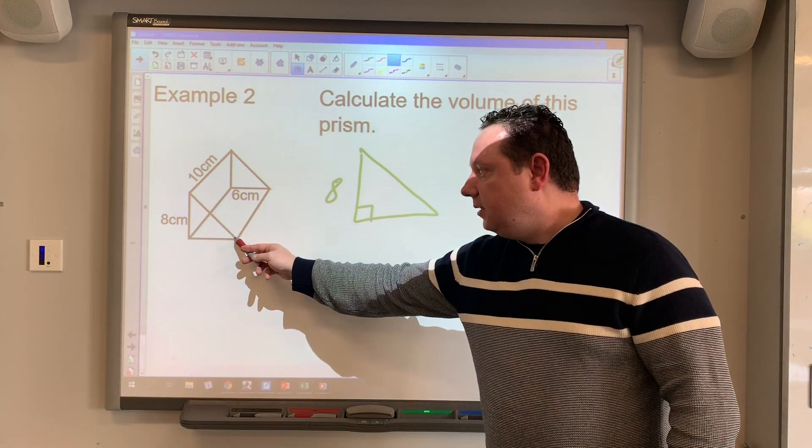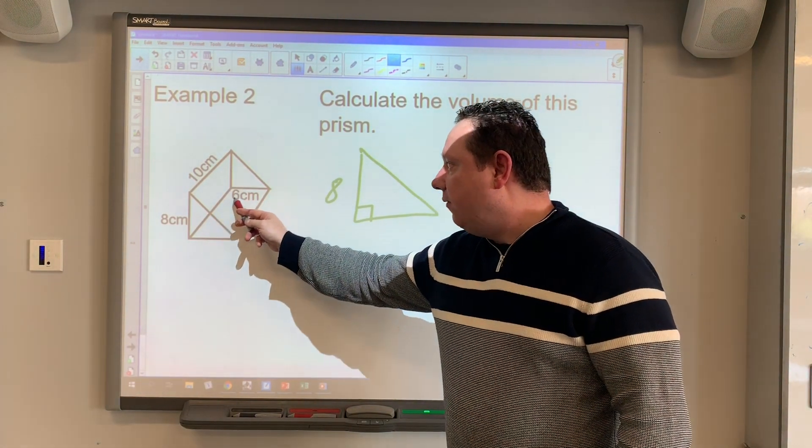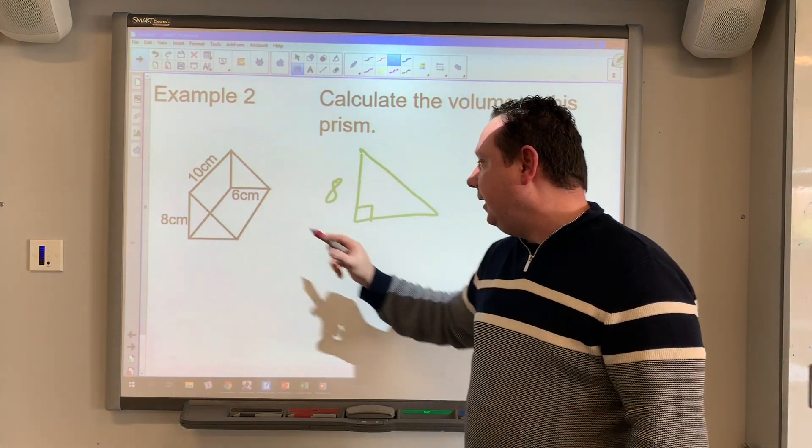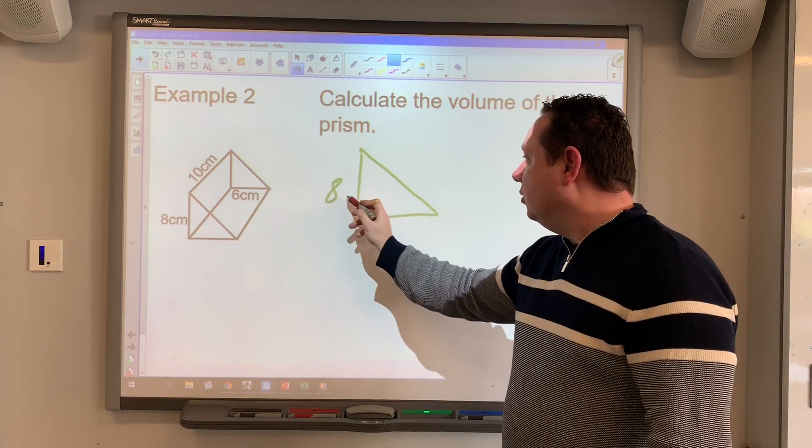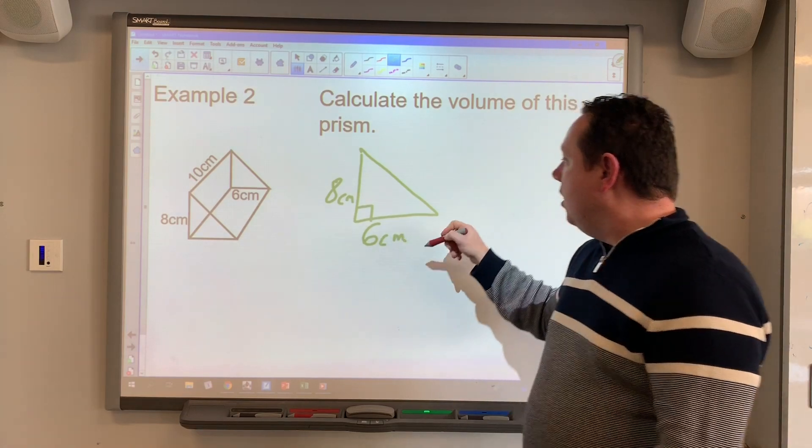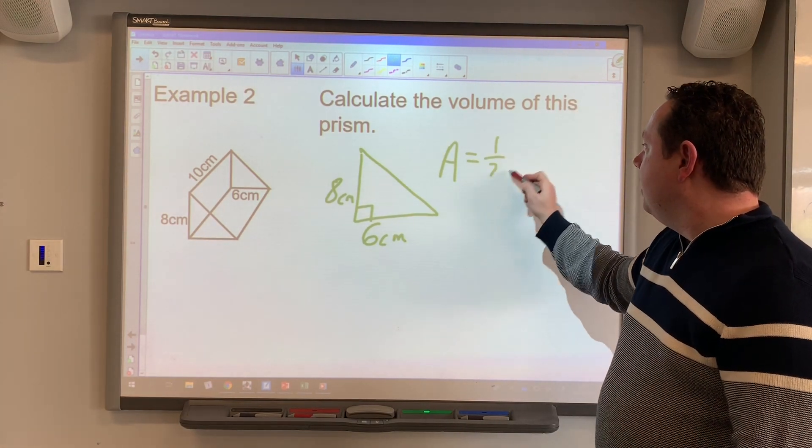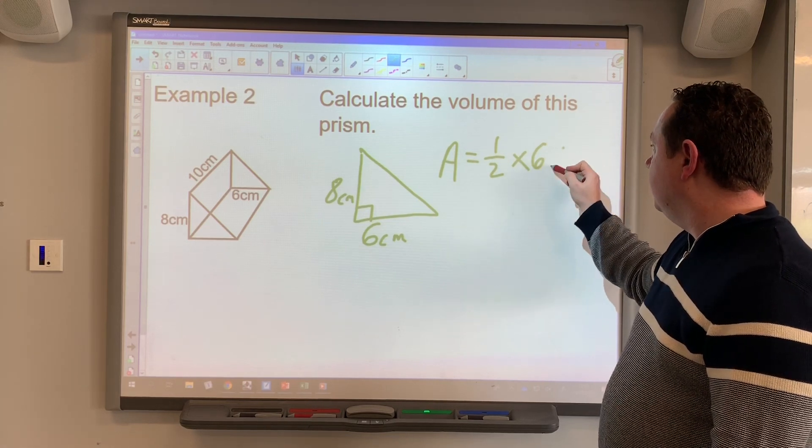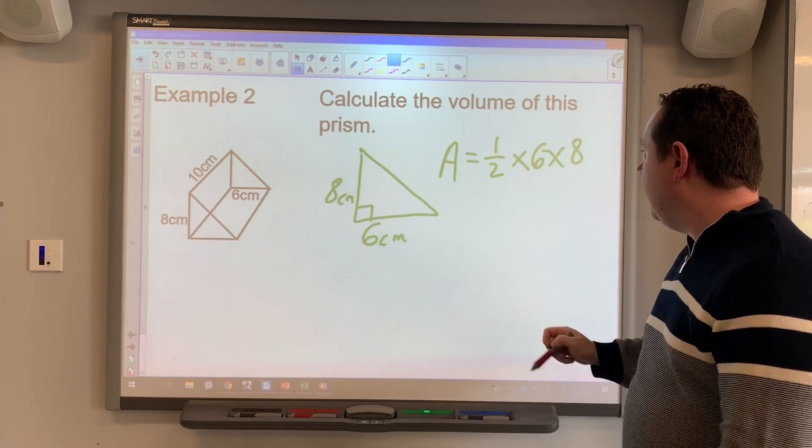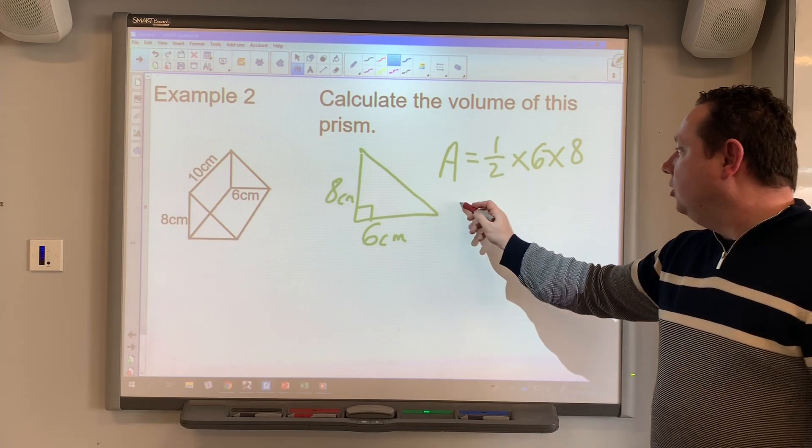I need to find the dimensions so one's already on it. I've got my eight centimeters here. I also need the base so I need to look to see what other side's the same. At the back is six, so it's eight centimeters by six centimeters. We all know by now the area of a triangle is a half the base which is six times the height which is eight, so it's a half of six times eight which is 24 centimeters squared.